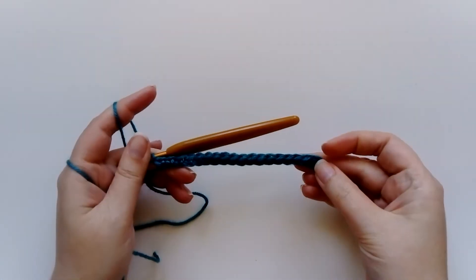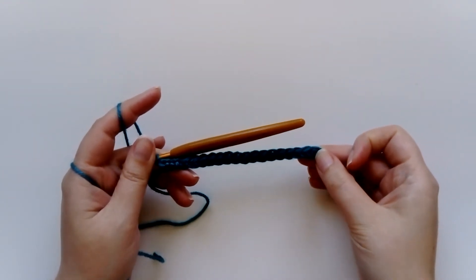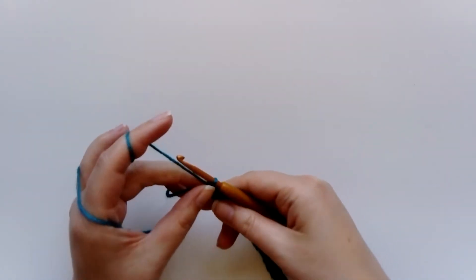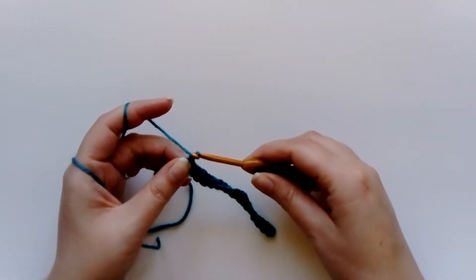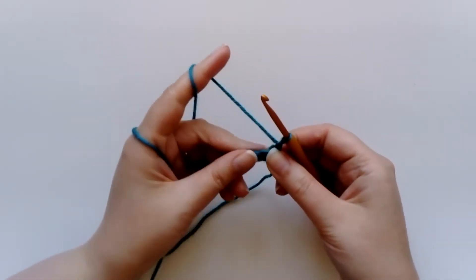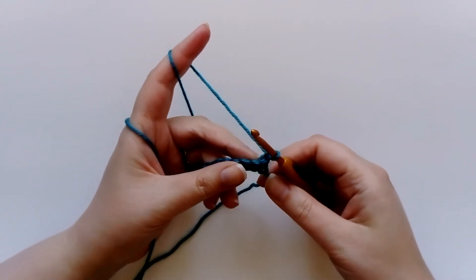And that completes my first row of double crochet. Now, to turn around and go back, because I'm working in rows, I'll do one chain. This is called a turning chain. It doesn't count as a stitch, but it enables you to turn around ready to work back along and gives you the space to work into the top of that stitch.